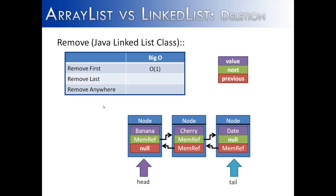The same can be said for removing an item from the end of the list. It also is going to have a Big O of 1 or constant time, because there is no shifting or manipulating of the data. All that has to happen is its pointers are changed, and the tail is no longer pointing to the node that is removed, but rather to the new tail of the LinkedList.